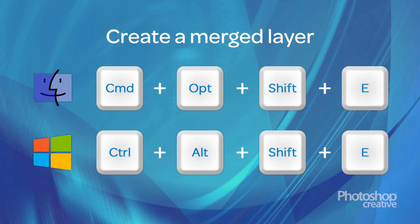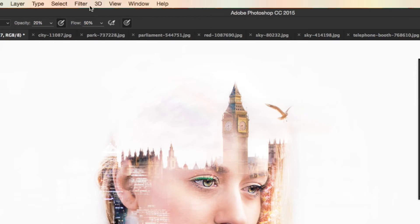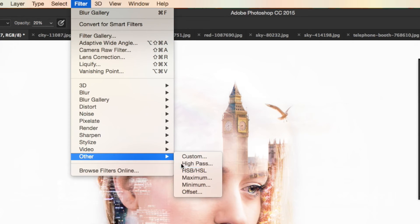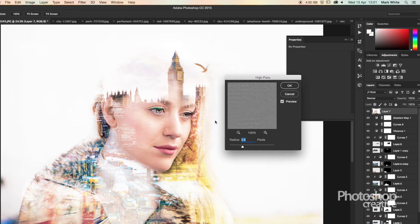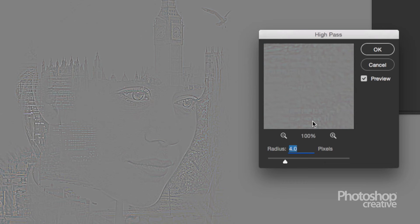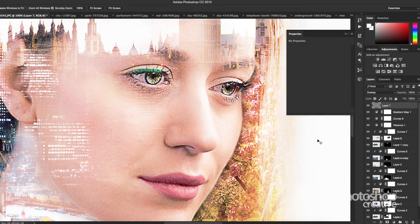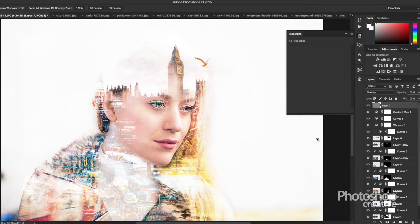Here's a tip for sharpening too. To create a merged layer at the top of your document, if you're on a Mac hit Command+Option+Shift+E, and on Windows hit Control+Alt+Shift+E. Go to Filter > Other > High Pass and choose a small radius — we're going to go with 4 pixels. Now set it to Overlay. This can really bring out the detail on some of your stock images.